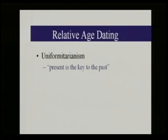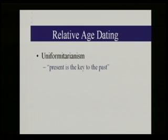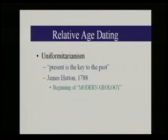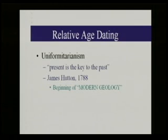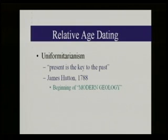Relative age dating is based on uniformitarianism — the present is the key to the past. We use present-day processes to investigate the rock record with the assumption that the same processes operated in Earth's past. This was first proposed by James Hutton in 1788. Hutton is sometimes given the credential as the father of modern geology, though we tend to want to name founders when many individuals were involved. Hutton's works are very difficult to read.